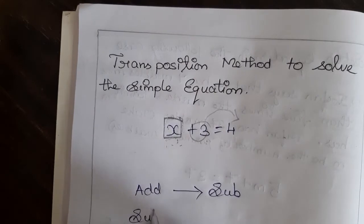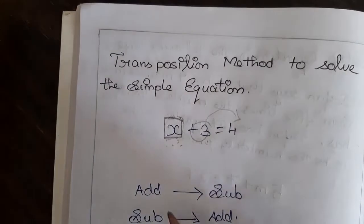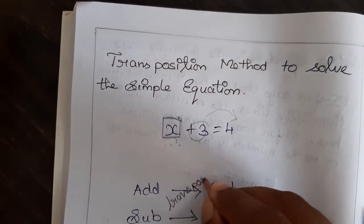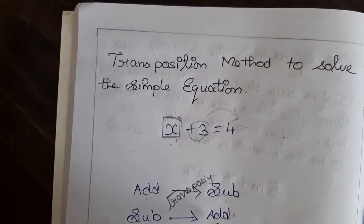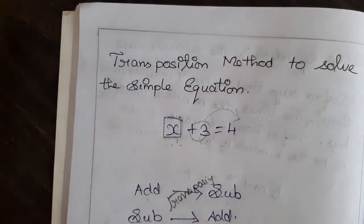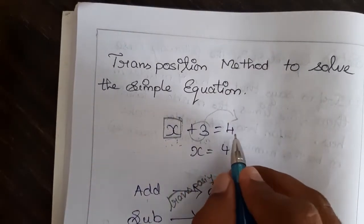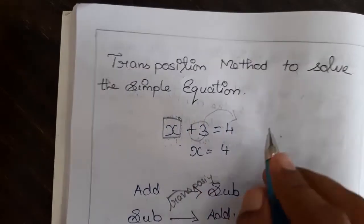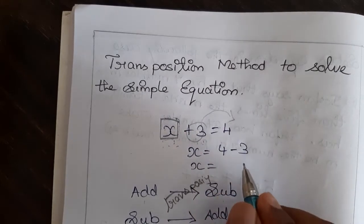If it is subtraction, while transposing, it will become an addition — it will change. While transposing, addition will become subtraction; the same way, subtraction will become addition. Now, it is plus 3, that is addition 3. If you take that to the other side, it will become a subtraction. So x is equal to 4, and only plus 3 we are taking to this side, so it will become minus 3.